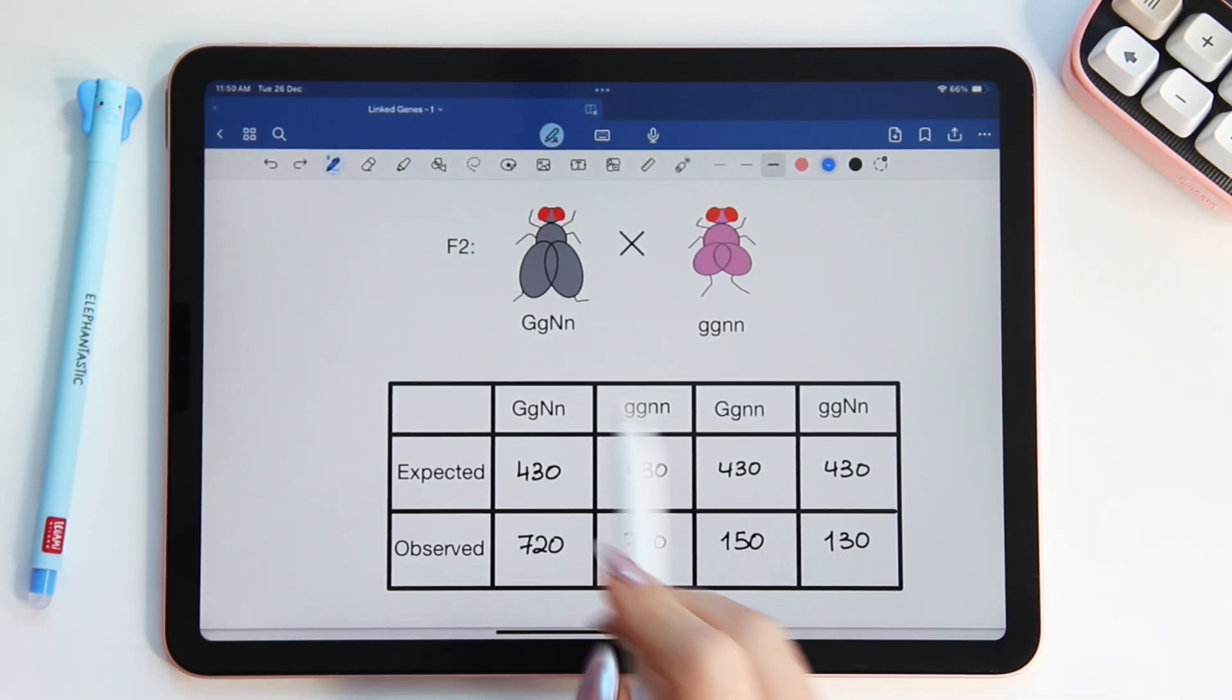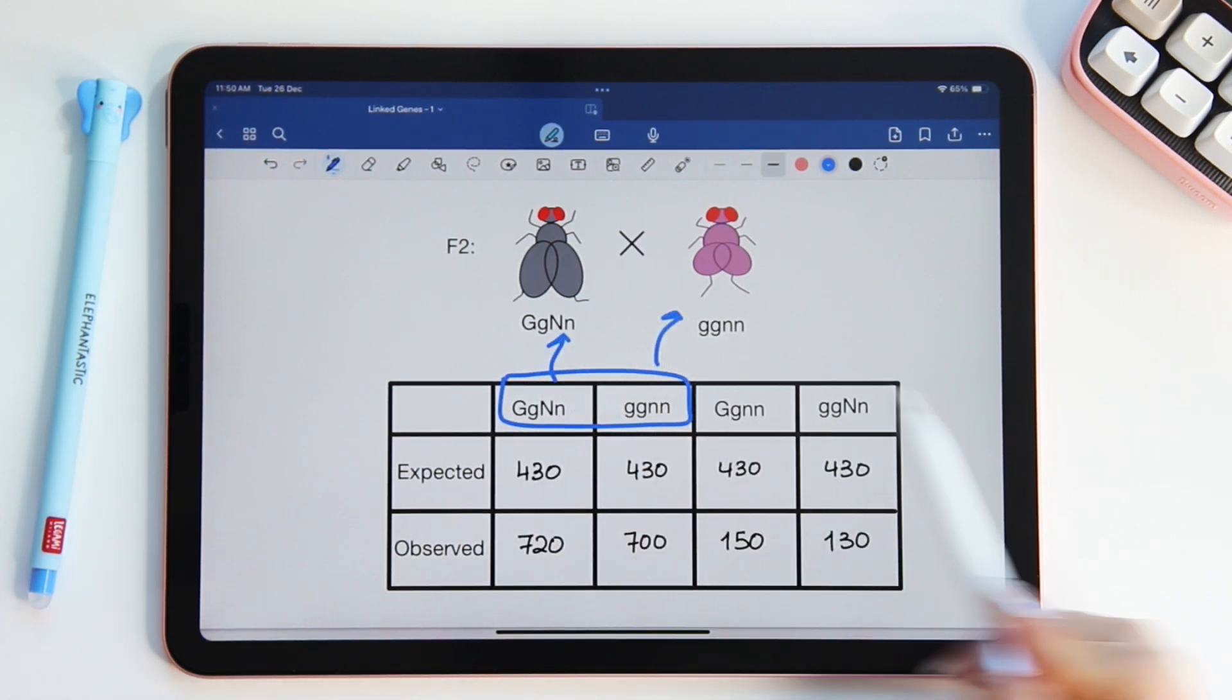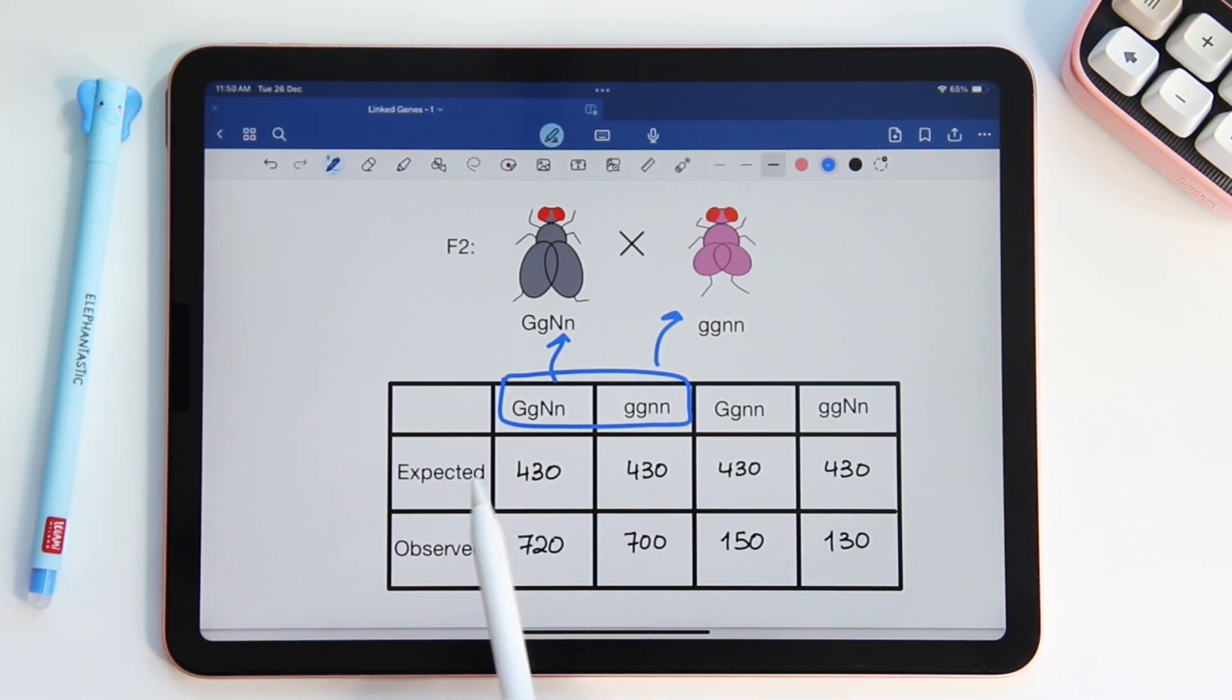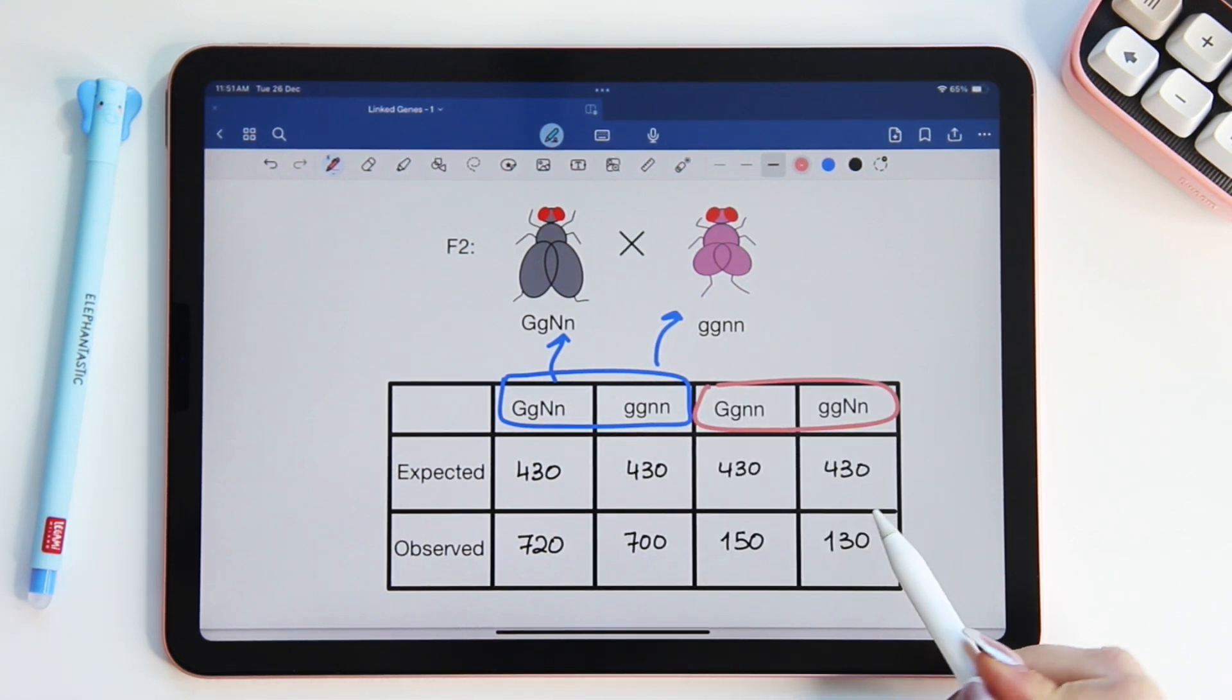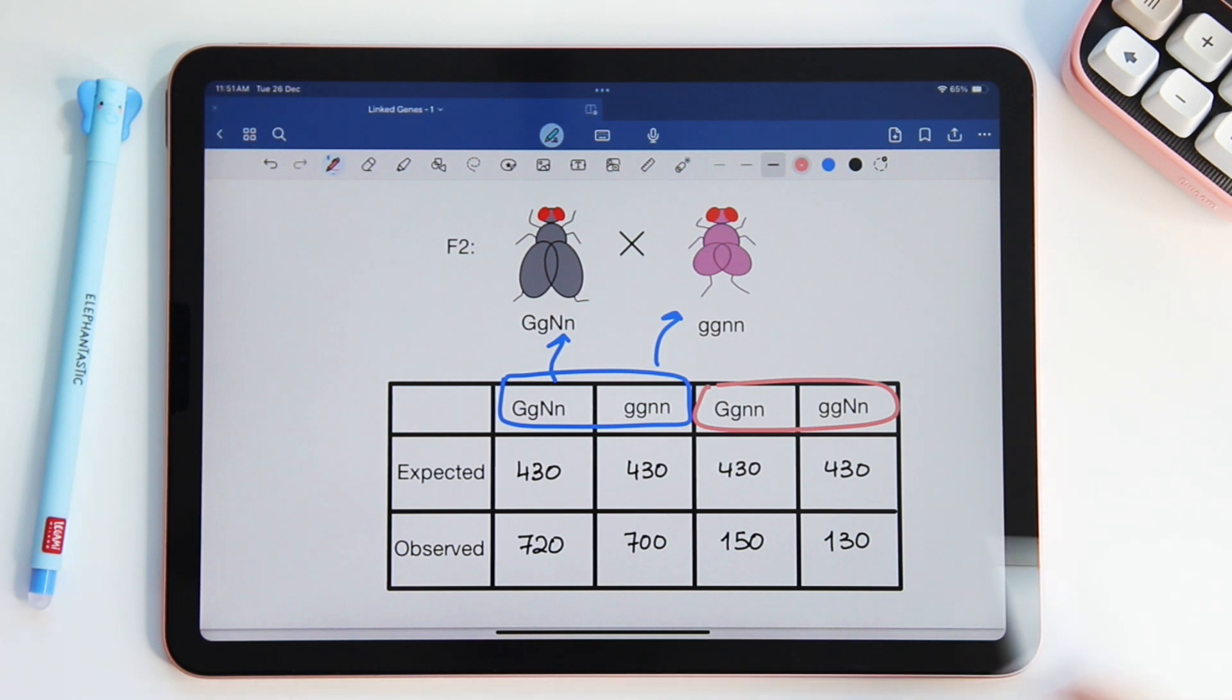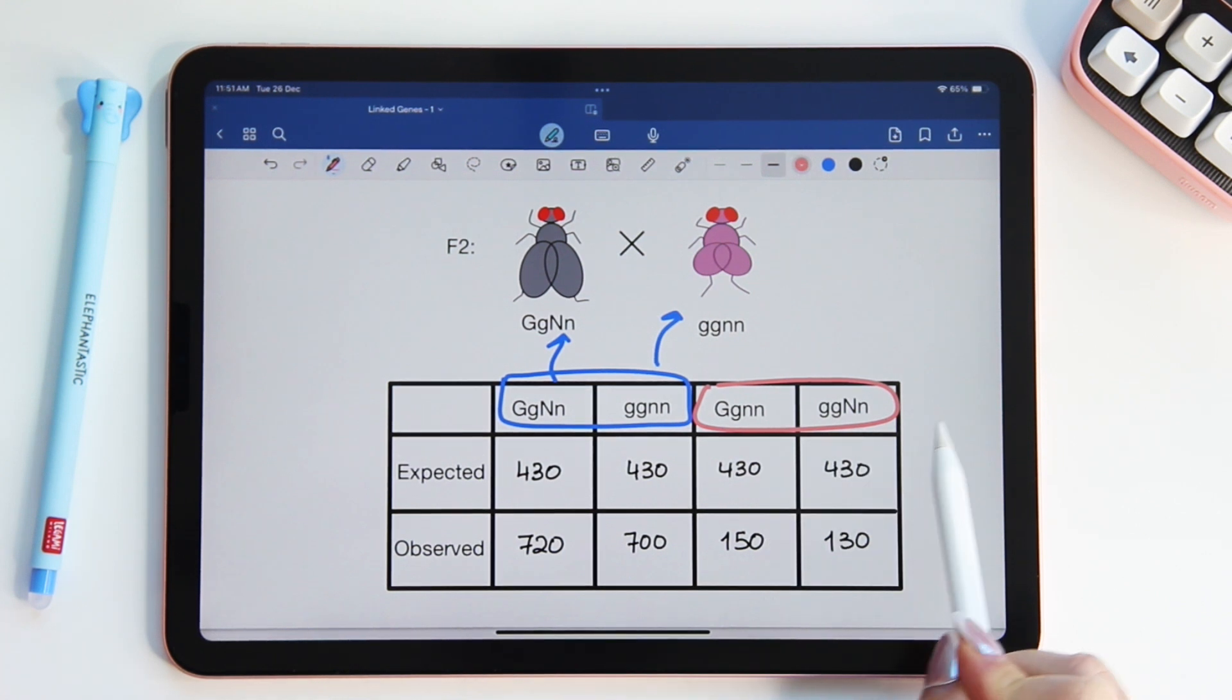So we agreed that these two phenotypes are parental phenotypes. They lead to flies having identical phenotypes as the parents. However, these two result in phenotypes that are a combination of the two parents, meaning gray body but short wings, pink body with normal wings. That's why we call them recombinants.